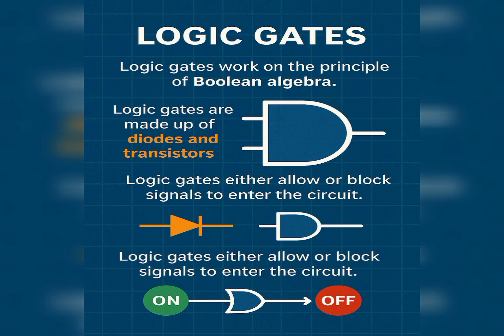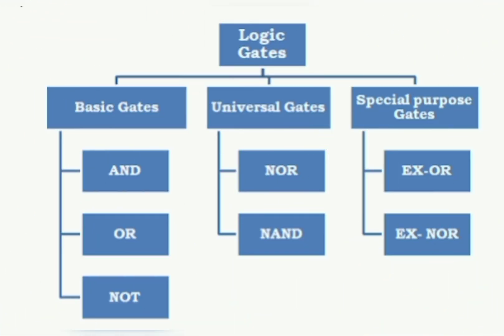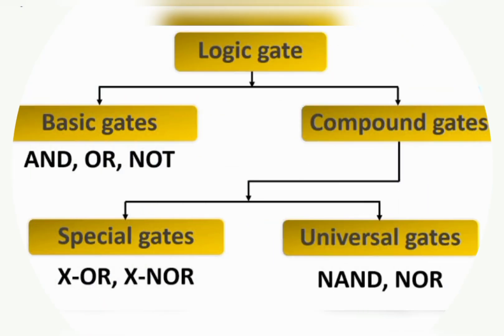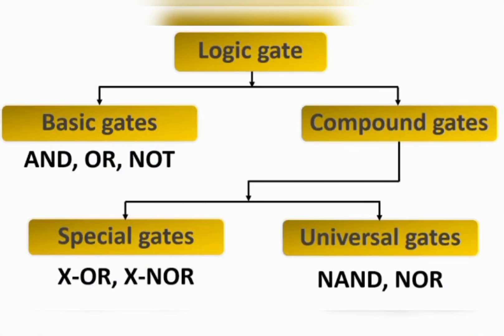Logic gates are the fundamental building blocks of all digital electronics. They take one or more inputs — either zero or one — and produce a single binary output. There are various types: the basic logic gates are AND, OR, and NOT. The universal logic gates are NAND and NOR. And we also have the special gates, which are XOR and XNOR.